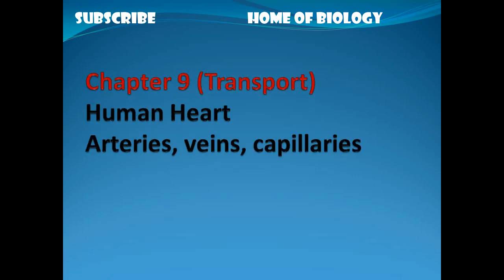Chapter 9 is Transport. The first main topic is the Human Heart, which has four chambers. Blood vessels — arteries, veins, and capillaries — are also covered. Students must understand the human heart and circulatory system thoroughly, including structure and function.